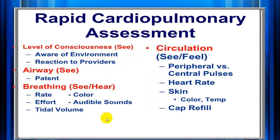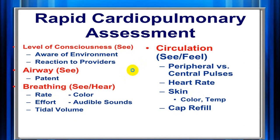For airway, check if patent. For respiration: rate, color of skin, audible sounds, tidal volume, respiratory auscultation. For circulation: peripheral and central pulses, heart rate, blood pressure, skin color, temperature, capillary refilling time. We call AVPU for disability. So airway, breathing, circulation, disability — then go for complete detailed examination, which we call exposure. When confronting a collapsed patient: ensure safety, check for cardiac arrest. If suspicion of cardiac arrest, start CPR immediately. Most urgent life-threatening is cardiac arrest — start with circulation, airway, and breathing. If cardiac arrest is shockable, defibrillate.